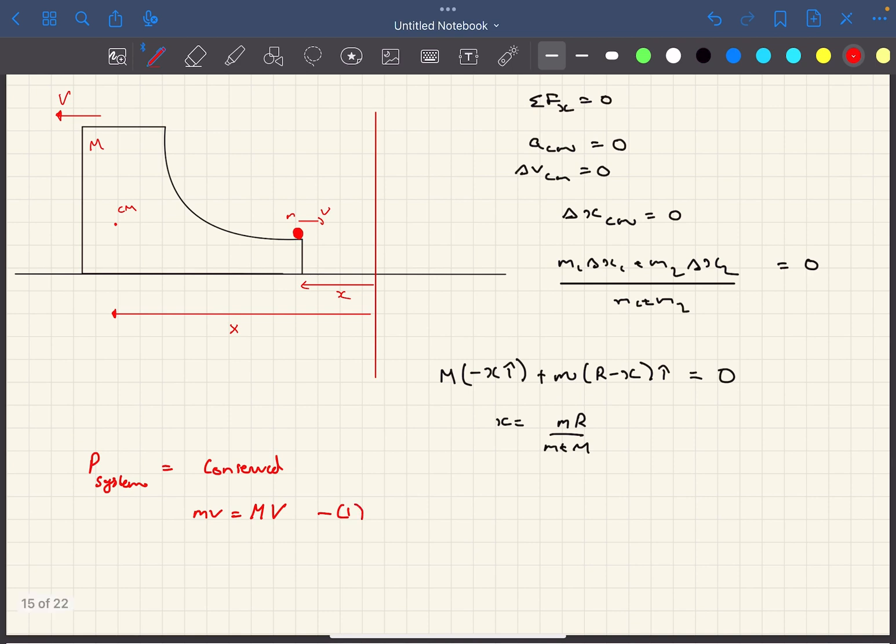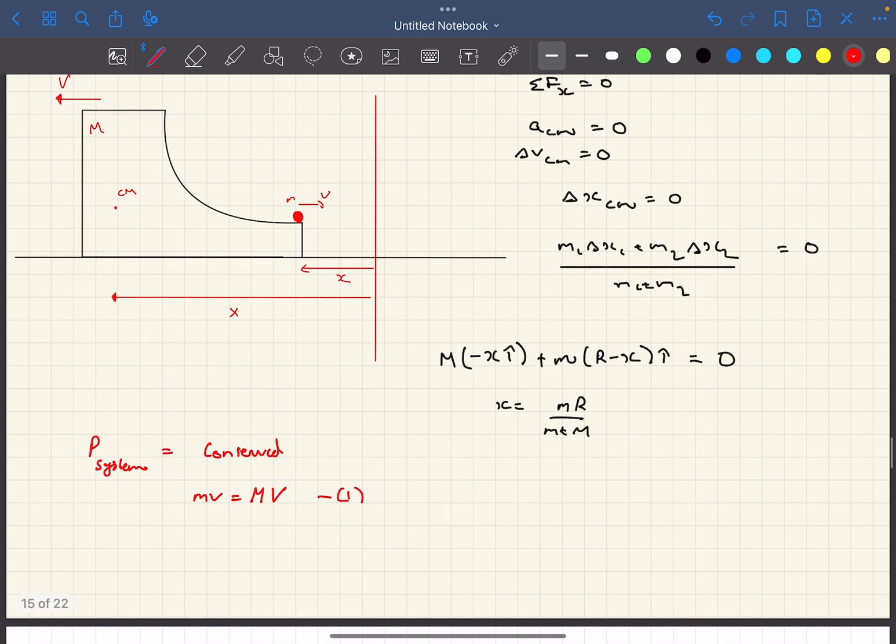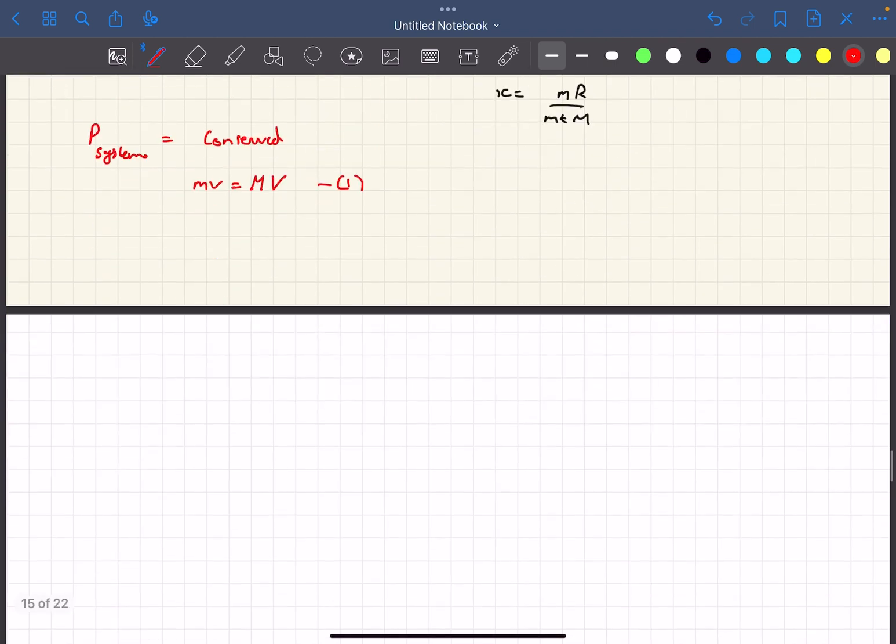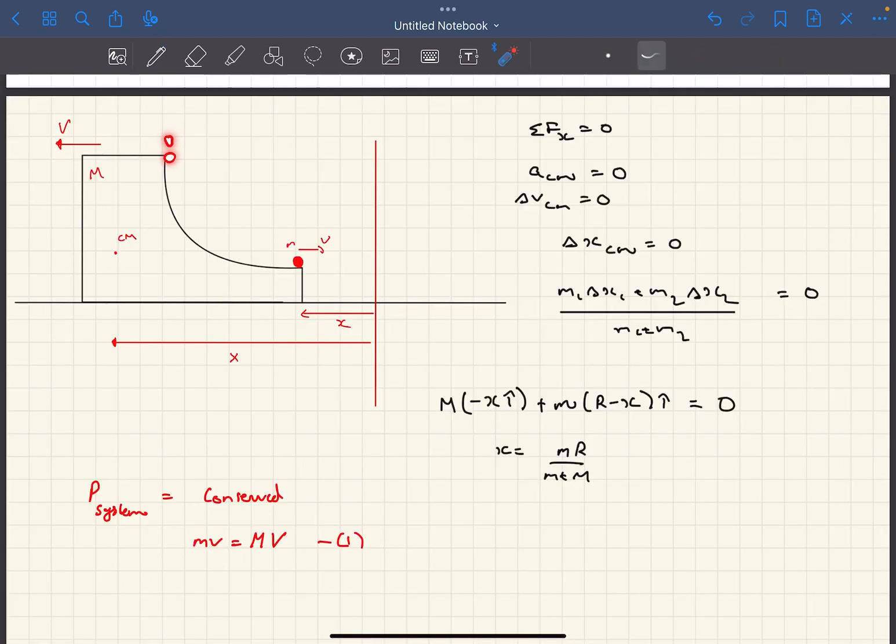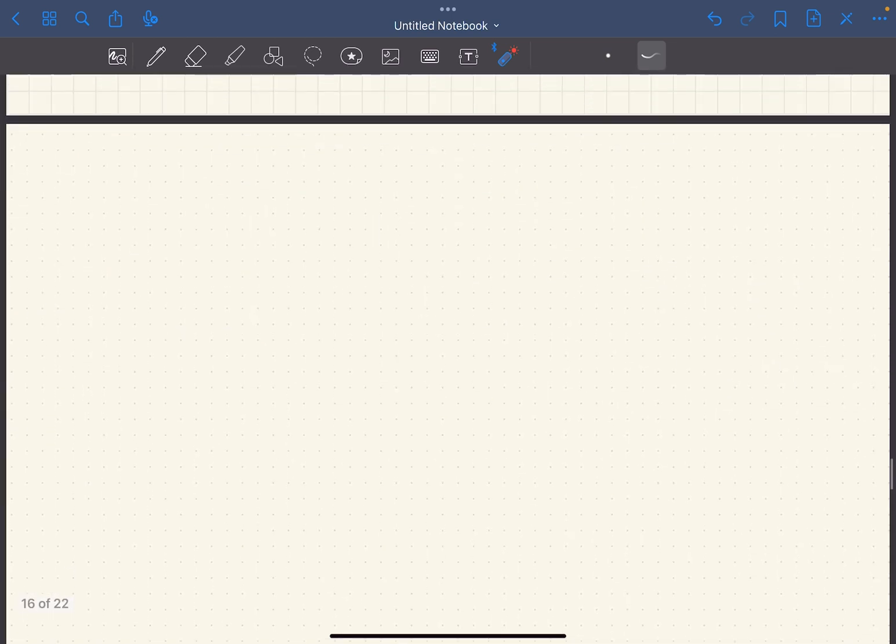And secondly, as there are no energy losses in the given question, we can conserve energy. So initially both the blocks were at rest so it didn't have any kinetic energy. Now as the small m mass was initially up here and now it is down here, it has fallen by a distance of R. Which means the decrease in potential energy of the small m mass is going to be mgR. And this would be equal to the increase in kinetic energy of the system.